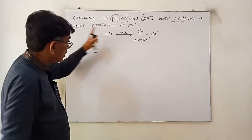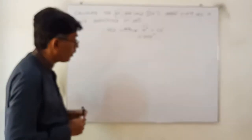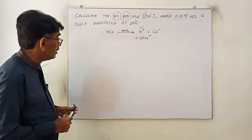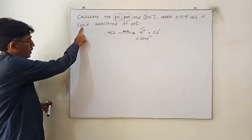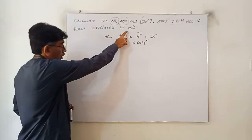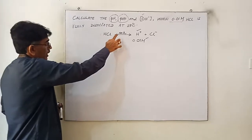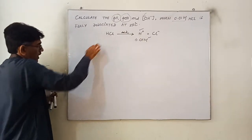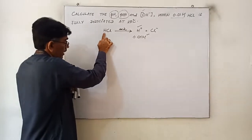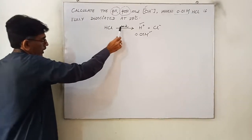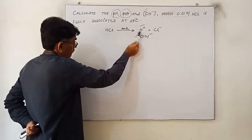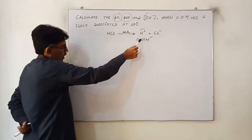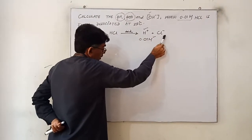Means you are given hydrochloric acid having a concentration of 0.01 molar. And as you know, hydrochloric acid is the acid which, when added to water, will be fully dissociated — broken down into their ions at 25 degrees centigrade.